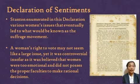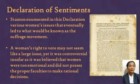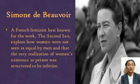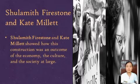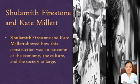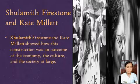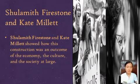A woman's right to vote may not seem like a large issue, yet it was controversial, in so far as it was believed that women were too emotional and did not possess the proper faculties to make rational decisions. Simone de Beauvoir, a French feminist best known for the work The Second Sex, explored how women were not seen as equal by men, and that the very realization of women's existence as a person was structured to be inferior. Shulamith Firestone and Kate Millett showed how this construction was an outcome of the economy, the culture, and society at large. Firestone believed that society must change to help address women's concerns, including the limitation of biology, specifically child care.